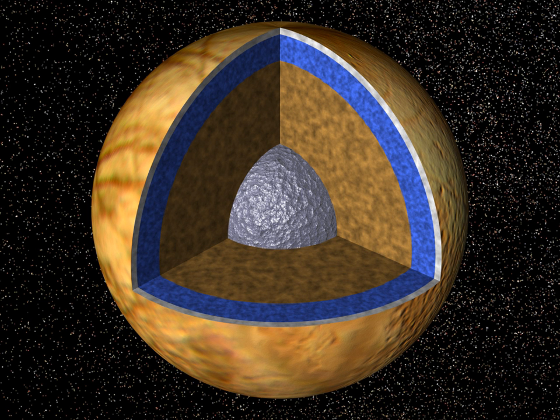Ultraviolet photons are not only biologically harmful but can drive fast atmospheric escape that leads to the erosion of planetary atmospheres. Photolysis of water vapor and hydrogen-oxygen escape to space can lead to the loss of several Earth oceans of water from planets throughout the habitable zone, regardless of whether the escape is energy-limited or diffusion-limited. The amount of water lost seems proportional to the planet mass, since the diffusion-limited hydrogen escape flux is proportional to the planet surface gravity.